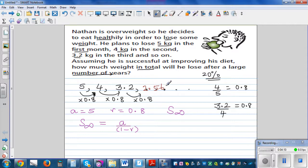So basically as this is decreasing, you will reach a stage where Nathan cannot decrease his weight. So this is a is 5 divided by 1 minus 0.8, which is 5 divided by 0.2. 5 divided by 0.2 is 25 kg.